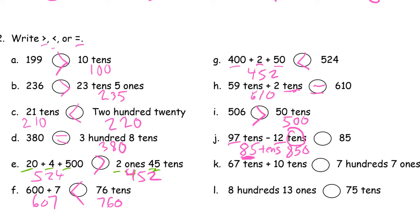Sixty-seven tens plus ten tens is seventy-seven tens, which is seven hundred seventy. And this is seven hundred seven ones — that's seven ones, not seven tens; there's a zero in there, there are no tens in seven hundred seven. So seven hundred seventy is greater than seven hundred seven. Eight hundreds and thirteen ones is eight hundred thirteen. Thirteen ones is really a ten and three ones. Seventy-five tens is seven hundred fifty. So eight hundred thirteen is greater than seventy-five tens, which is seven hundred fifty.